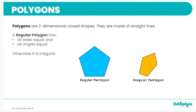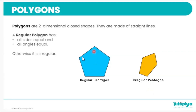Next, we're going to look at polygons. Polygons are two-dimensional closed shapes always made of straight lines. Regular polygons have all sides the exact same length and all angles equal. If a polygon doesn't follow these two rules, it is called an irregular polygon. For example, this is a regular pentagon with equal sides and equal interior angles, while the yellow pentagon is irregular because it does not have equal sides or equal angles.